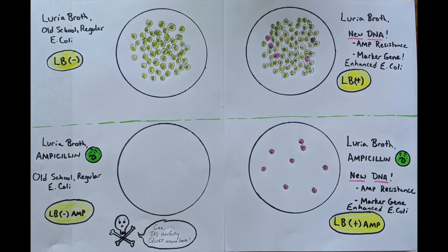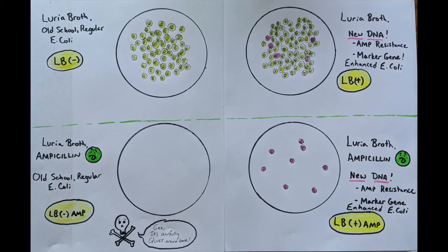LB AMP minus plasmid — ampicillin-infused plate, no DNA transformation, wild type bacteria. Answer: no. Prediction: no bacterial growth. Why? They're going to get killed by the ampicillin and if you're getting killed, you're not going to be reproducing. LB plus plasmid — prediction: yes, for sure. Reason: it doesn't matter if you're a transformed bacteria or not — you have all the nutrition you need, you're going to double, so there will be a lawn. Last: LB AMP plus plasmid — prediction: yes. Even though there's ampicillin, you should have at least a few cultures that took up the gene, and those bacteria will reproduce in isolated colonies.